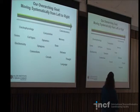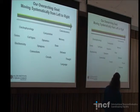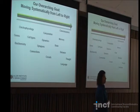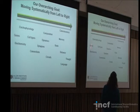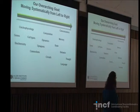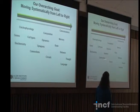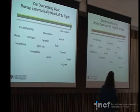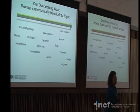Our overarching goal is understanding things like consciousness, memory, behavior, and thought — how the brain works. Much like was mentioned earlier, starting with things like gene expression and electrophysiology, understanding the different cell types, the connections they make, and who talks to who in the brain that elicits consciousness, memory, and everything that makes us who we are.